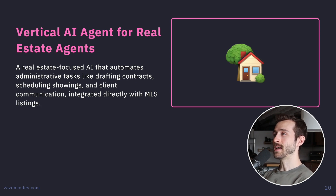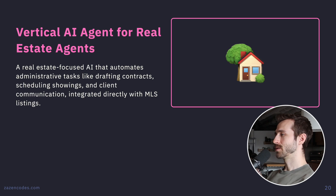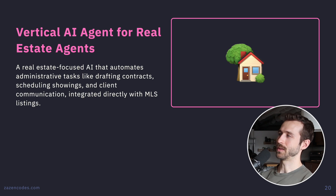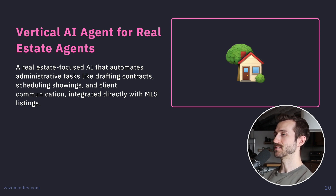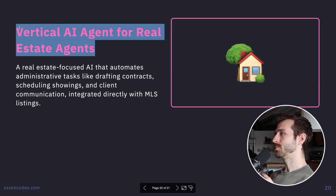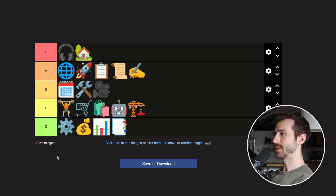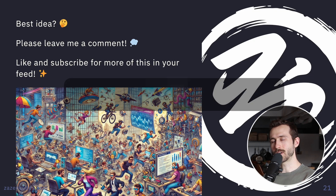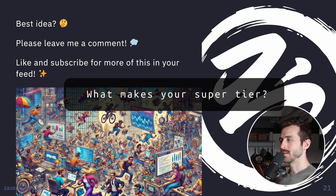Vertical AI Agent for Real Estate Agents — a real estate-focused AI that automates administrative tasks like drafting contracts, scheduling showings, and client communication, integrated with MLS listings. MLS data will cost some money, but real estate customers have a lot of money and can pay for it. I love this idea — I'm supering it. That's my second S tier idea.